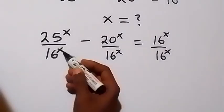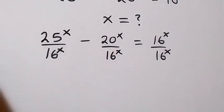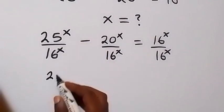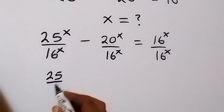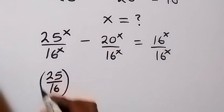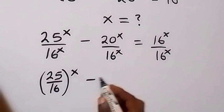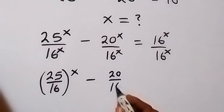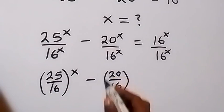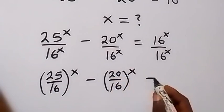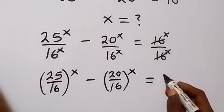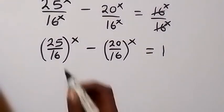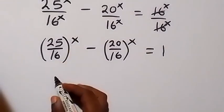From here we apply the law of indices and we can take the power of x out, so this becomes 25 over 16 raised to power x, then minus 20 over 16 raised to power x. Then here the 16^x terms cancel out and that remains 1.